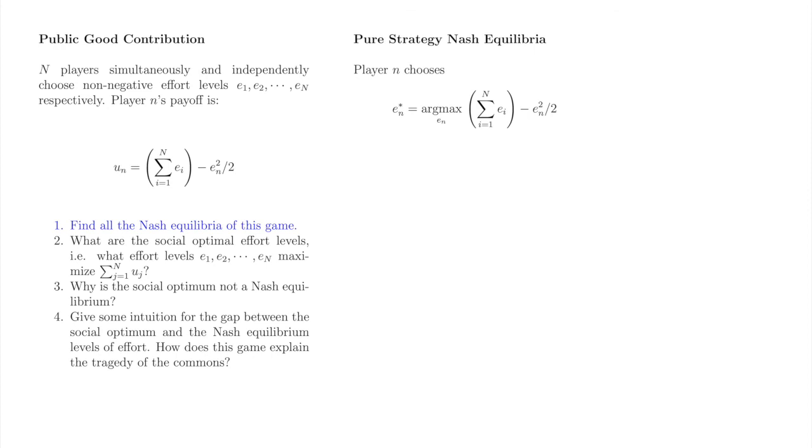We will use little n as our representative player. The symmetry of this game means we can do all of the analysis for one player, and then conclude that the remaining players use the same strategy in Nash equilibrium.